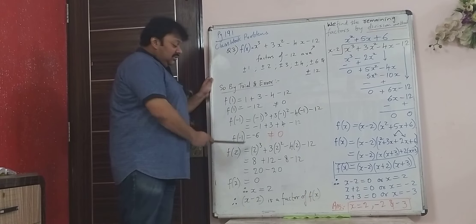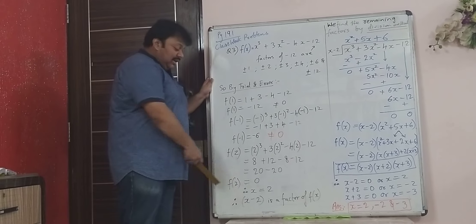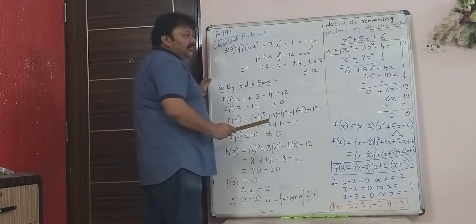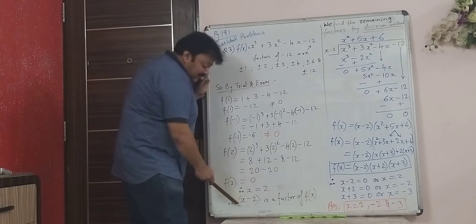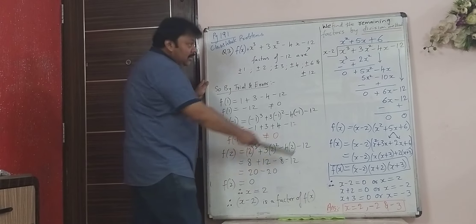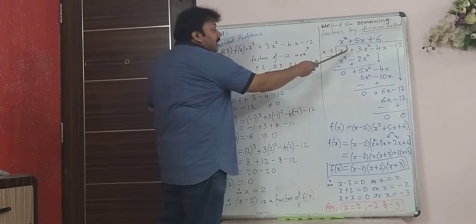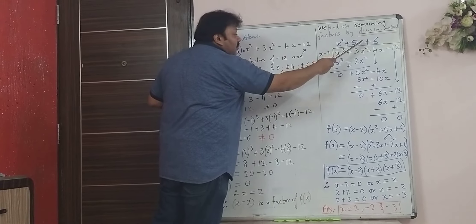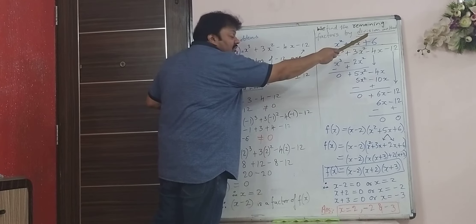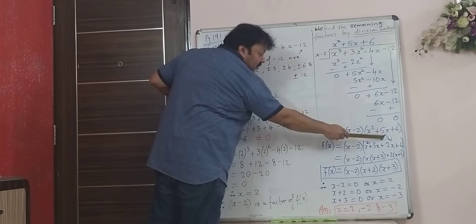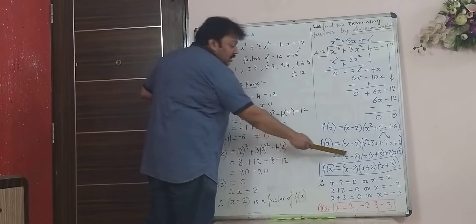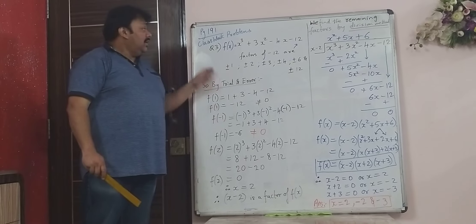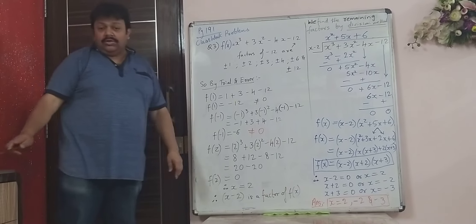This is the method: first find one factor by trial and error by looking at the factors of the constant term. After finding that one factor — which we found as x minus 2 — use that factor to divide the given polynomial to find the other two factors. Please solve this in your notebook.